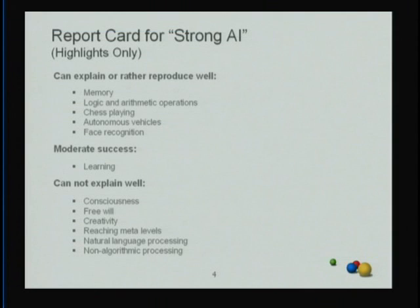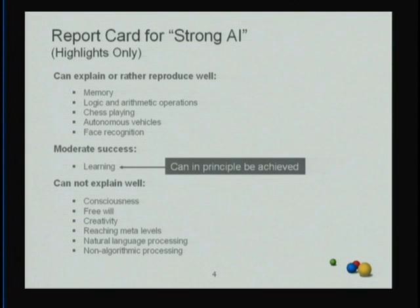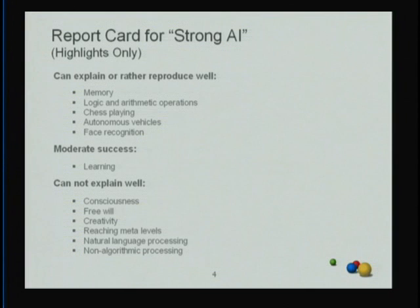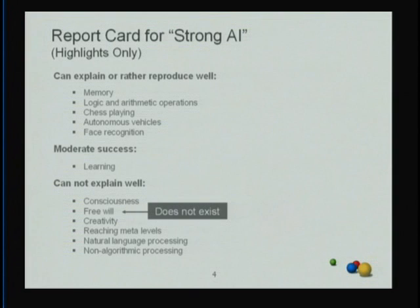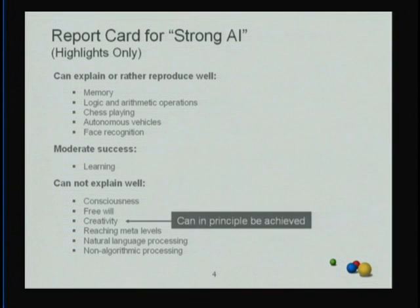Then there are areas where today's picture doesn't help us come up with a good explanation at all. These are areas important for consciousness. The things we cannot explain well are obviously consciousness, and the question of free will. Strong AI would say consciousness is an epiphenomenon — it has no functional role, hence we don't need to explain it. Free will in this picture simply does not exist.